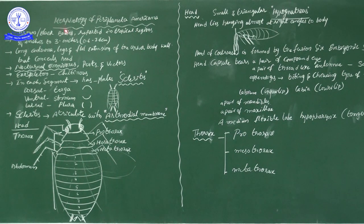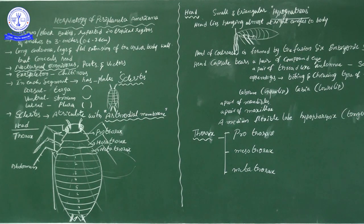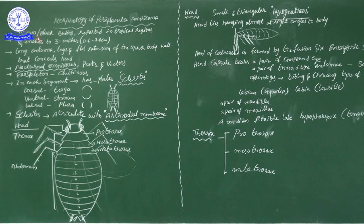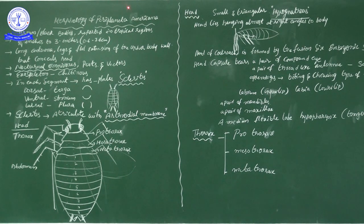Morphology is defined as the external appearance of an organism — the structure we can find by using our eyes. Regarding the color of Periplaneta americana: the body color is either brown or black. Some cockroaches are brown and some are black.